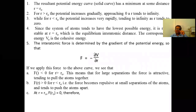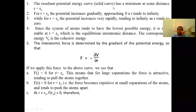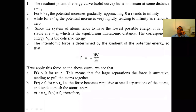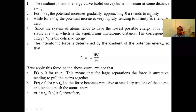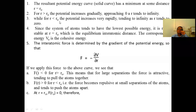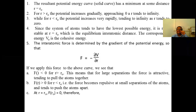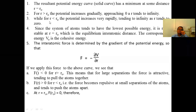The resultant potential energy curve — the solid line — has a minimum at some distance R = R₀. The potential energy at R = R₀ is minimum, that is V₀. For R greater than R₀, the potential energy increases gradually and approaches zero as R tends to infinity. Since the system of atoms tends to have the lowest possible energy, it is most stable at R = R₀.